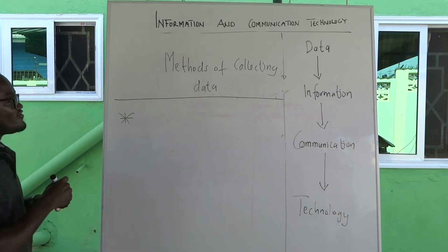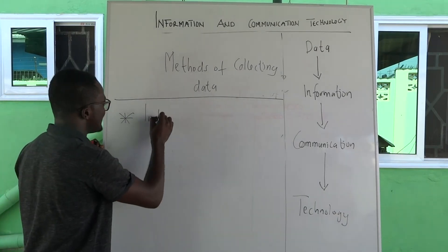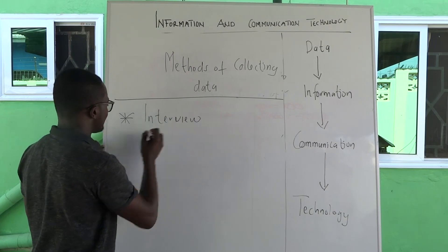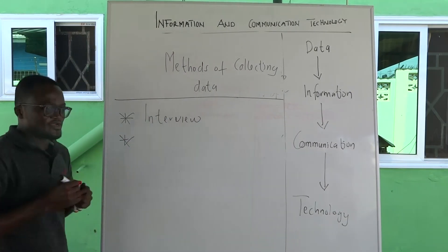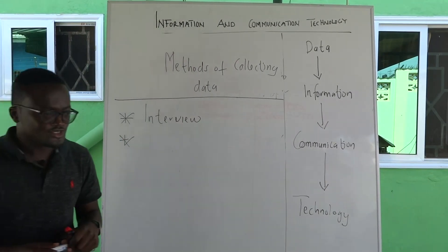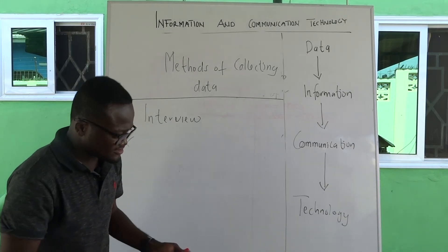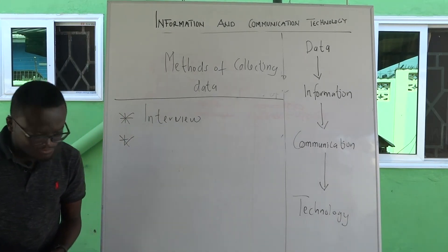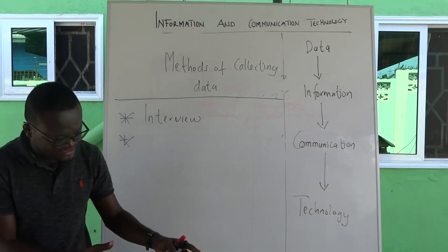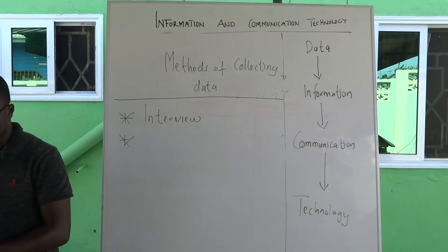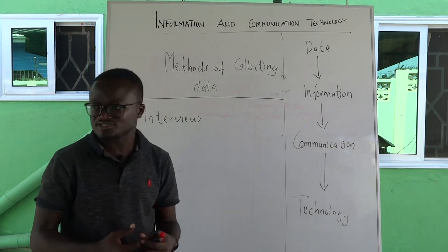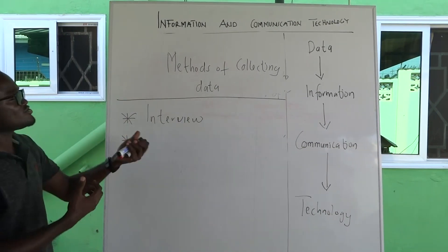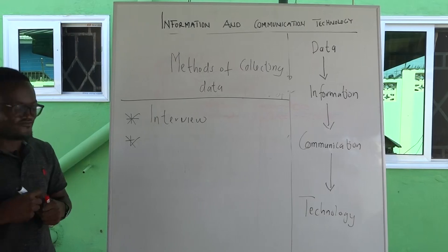What the policeman is doing by asking people questions about what happened is what we call interview. So the first method of collecting data is interview. When the policeman comes to your house and sees blood on the floor, the policeman looks at it — observing where the blood started to where it ends. What the policeman is doing is called observation. So the second method of collecting data is observation.